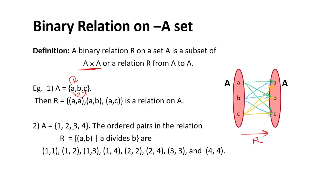Another example: for set {1, 2, 3, 4}, the ordered pairs in the relation can be (a, b) such that a divides b, meaning b is divisible by a. The elements would be: (1,1), (1,2), (1,3), (1,4), (2,2), (2,4) and so on.